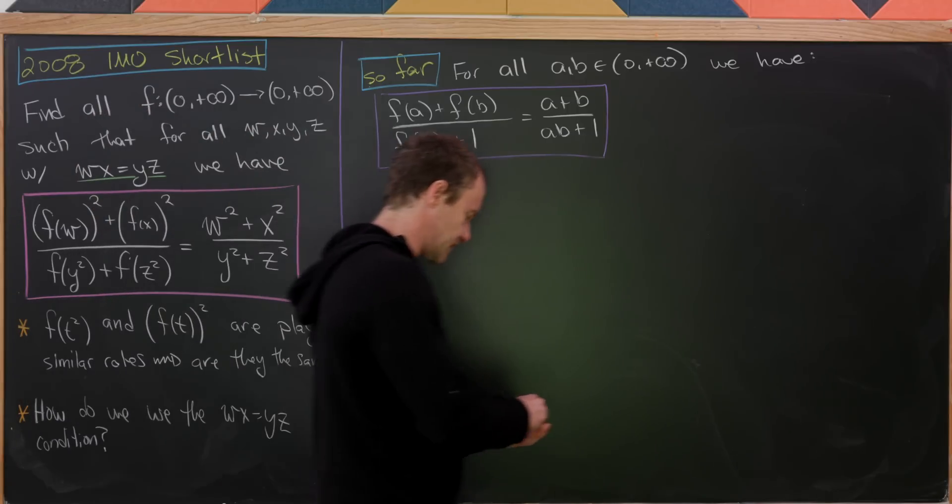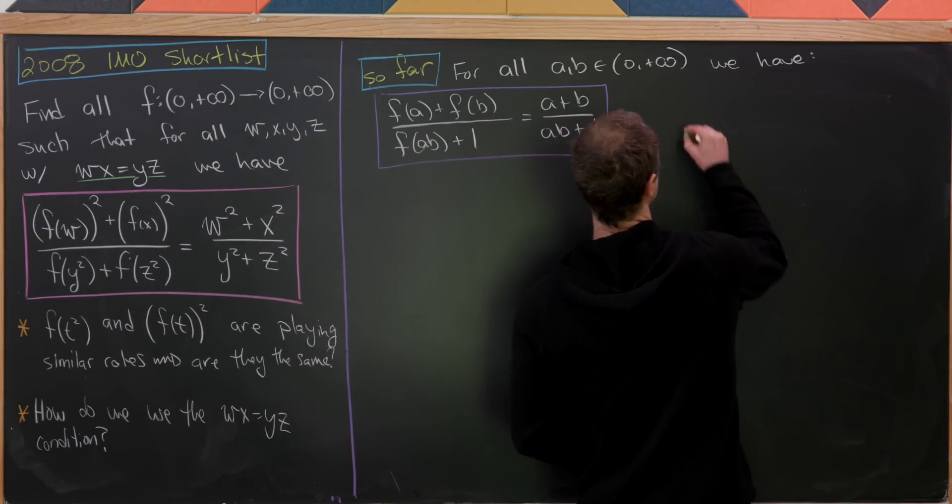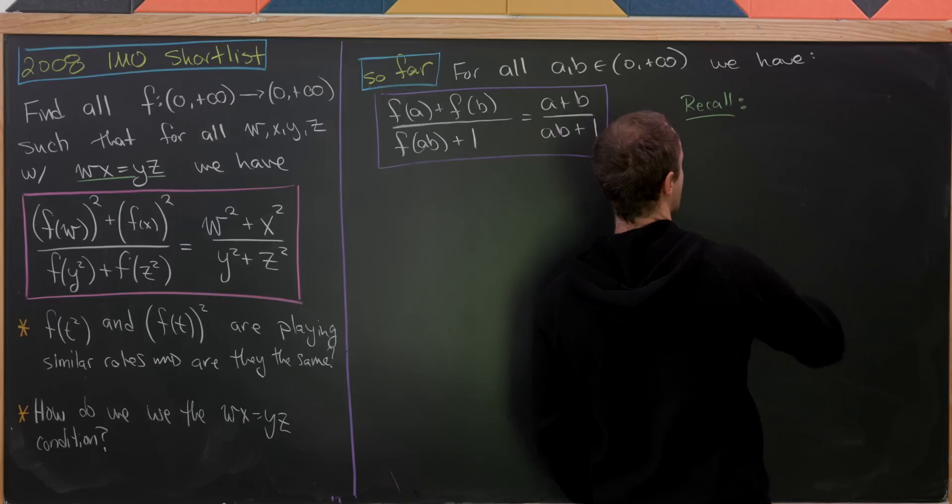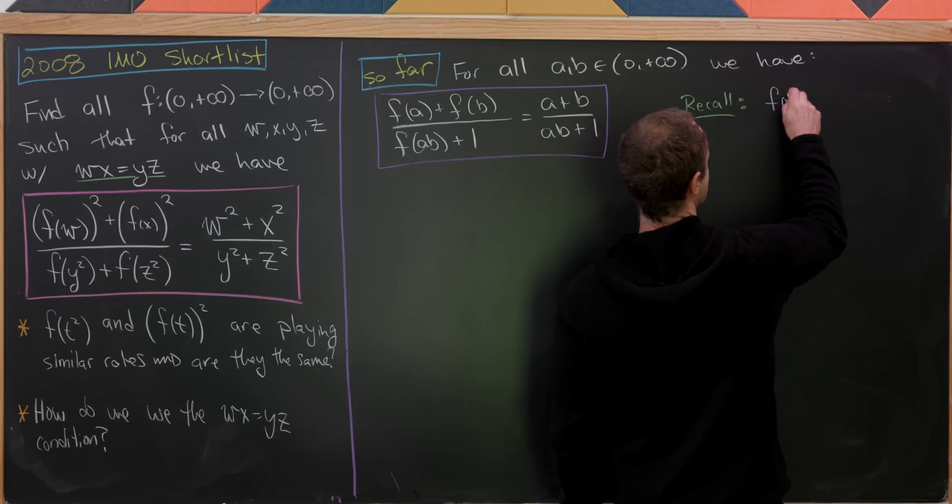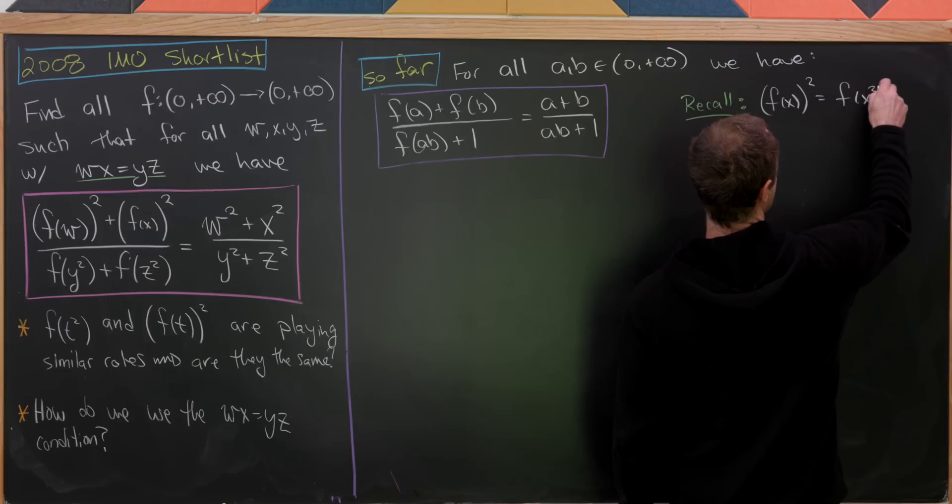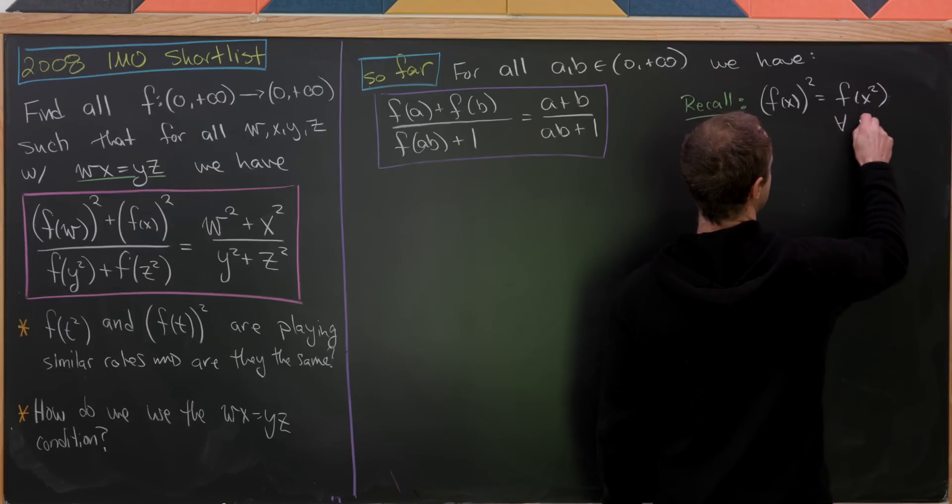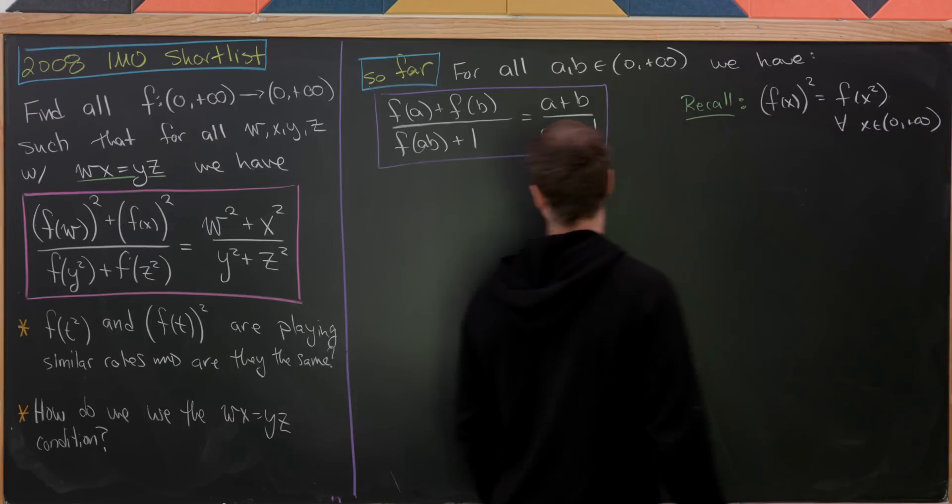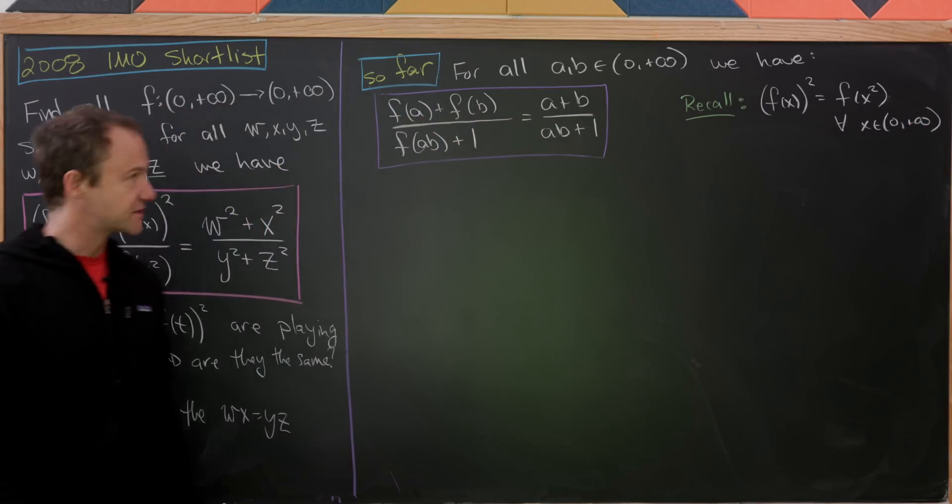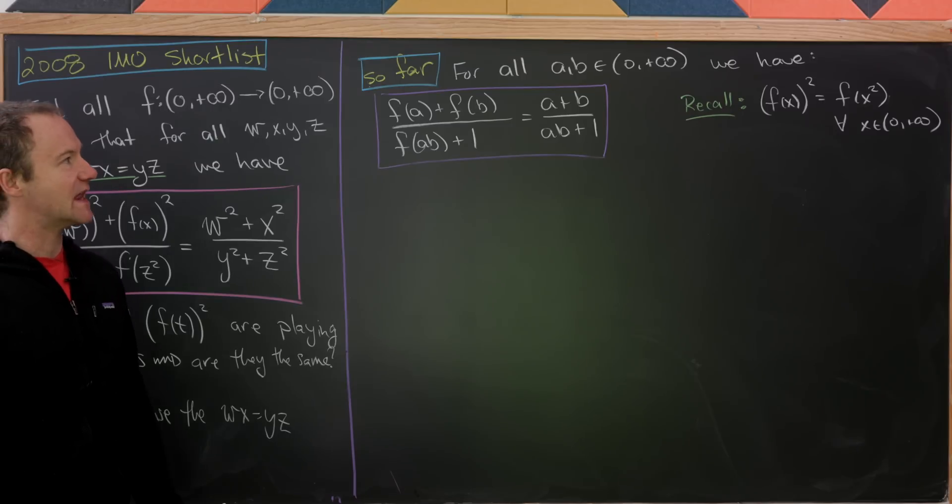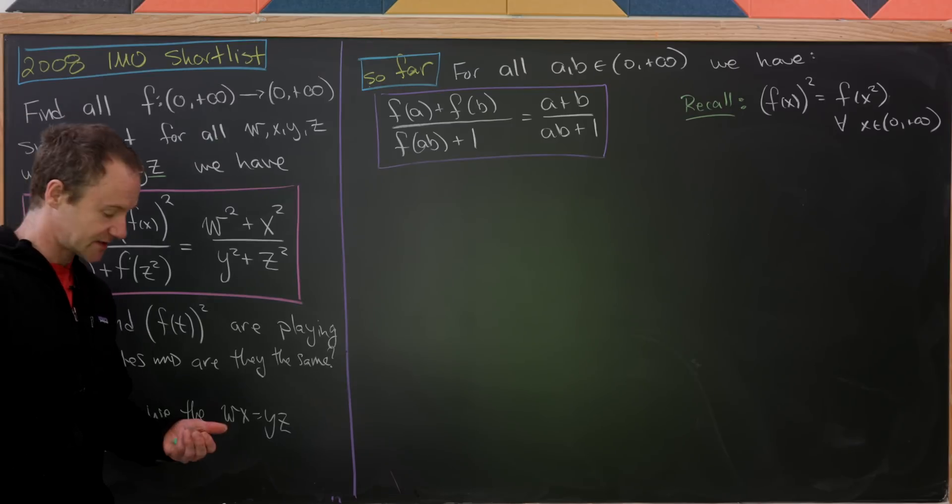So now where will we go from here? Well, let's recall something that we had on the last board to motivate our next step. And that thing was that f(x)² was the same thing as f(x²). And this was true for all x on the positive real numbers. So how can we get that into the mix here? Well, what if we set a equal b equal x? That'll do it.